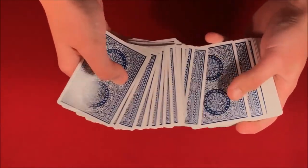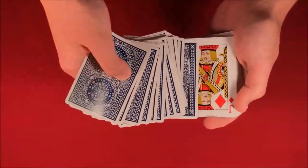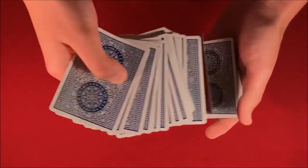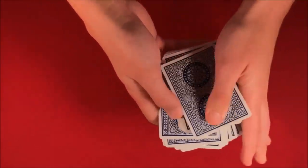The spectator could pick this card here from the middle, so it's a completely random choice. In this case, let's say we have the jack of diamonds here. You tell them you're going to leave their card in the middle of the deck.